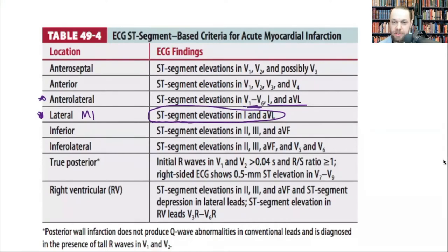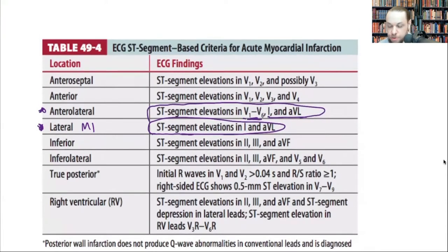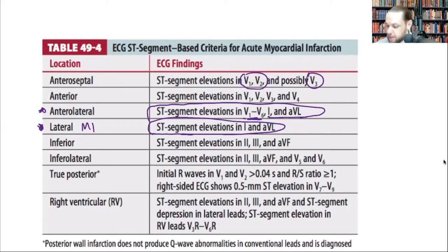For anterior-septal MI you see elevations in V1 and V2, the true septal wall fed by the LAD, with possible V3 involvement. Once you extend to V3 and V4, that's the anterior wall. Anterior wall is fed by the LAD; anterior-septal is LAD; anterior-lateral wall is LAD plus the circumflex.